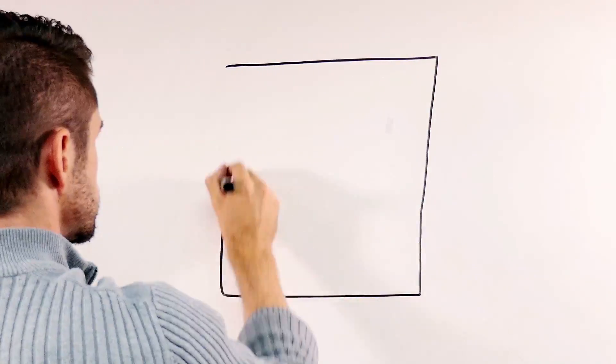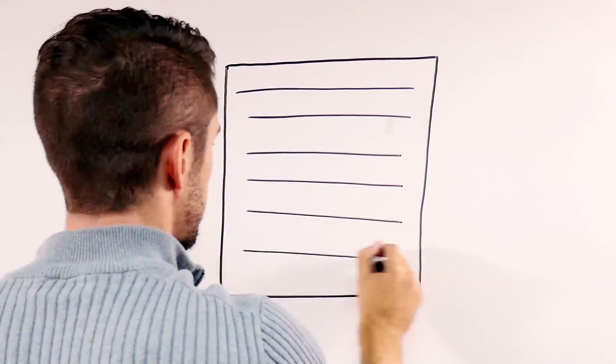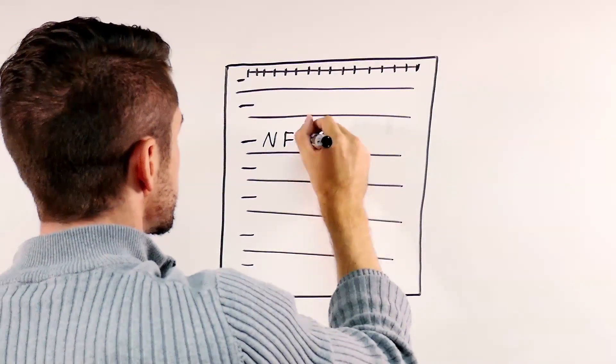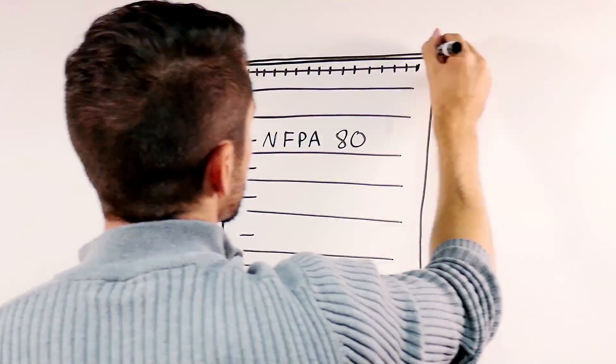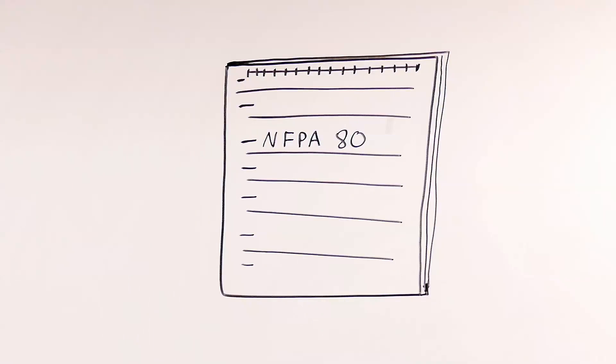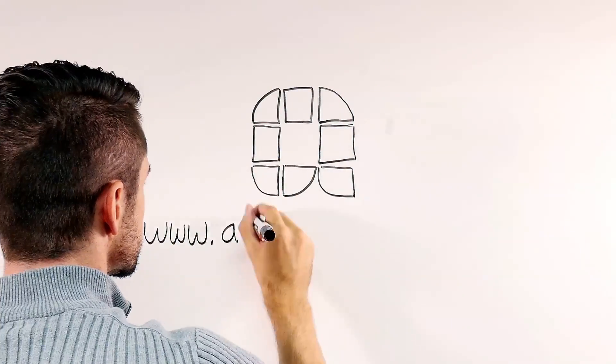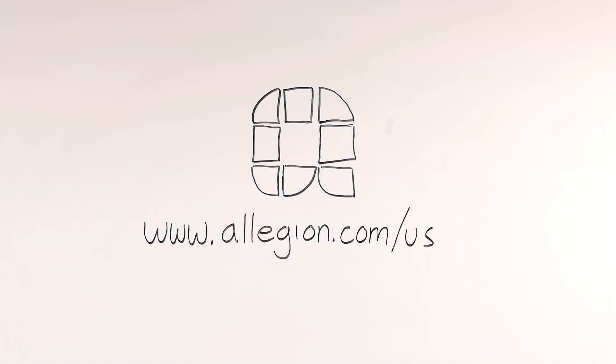NFPA 80, standard for fire doors and other opening protectives, is a standard referenced by the model codes and contains other requirements for fire door assemblies. For more information, visit www.idighardware.com/fire-door. To watch more videos, visit our training page at www.allegion.com/US.